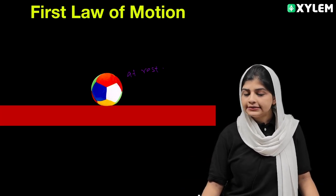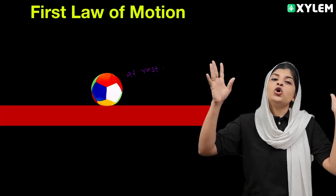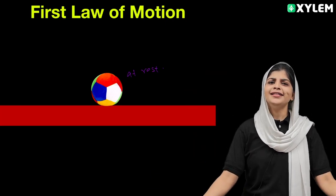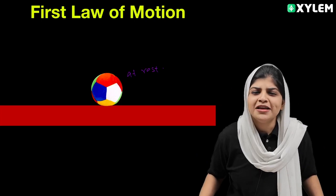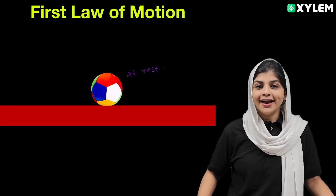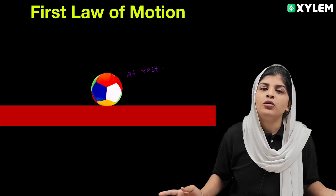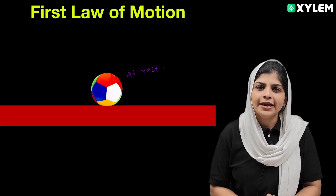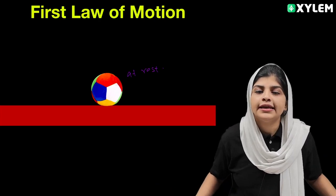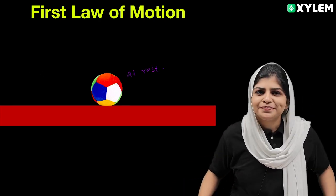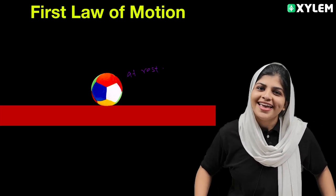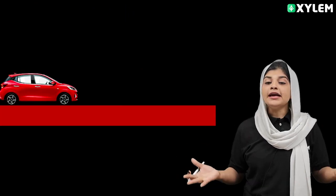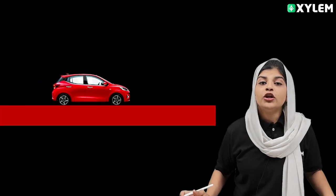An unbalanced force acts on the ball. If we apply a force, the ball moves. We always have the rest of our body maintained unless a force acts. If I apply a force, I can change the state of rest of a body. That body will remain at rest unless a force acts on it. That's why we come to Newton's first law.